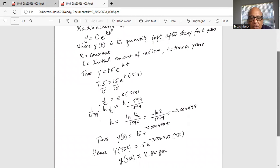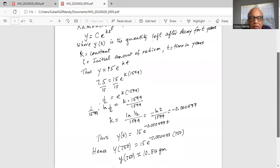So y(750) = 15 × e^(-0.00433 × 750). We use the calculator to crunch out the natural number raised to that power, and then multiply by 15. We get how much radium is left after 750 years. Out of 15 grams is 10.84 grams. Quite a bit left even after 750 years.